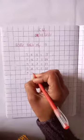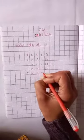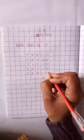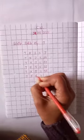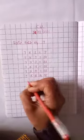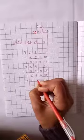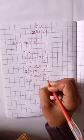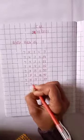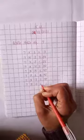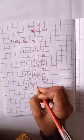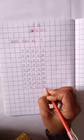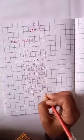7 times 5, 35. 7 times 6, 42. 7 times 7, 49. 7 times 8, 56. Seven nines are sixty-three. Seven tens are seventy.